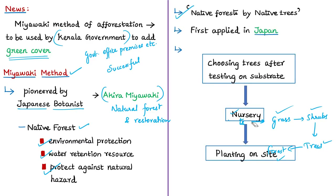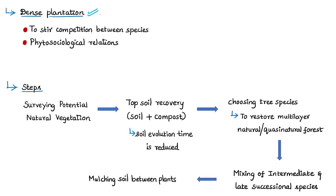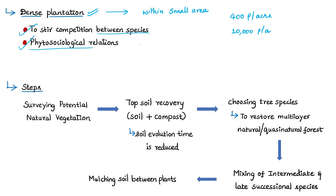This method was first applied in Japan. Miyawaki chose various native species of trees tested on the substrate — the surface on which an organism lives, grows, or obtains nourishment — then created a nursery where plants were mixed and planted on site. He implemented unusually dense plantation of very young seedlings, growing a great number of saplings within a small area. Normally a planting technique has about 400 plants per acre, but the Miyawaki method uses around 10,000 plants per acre.